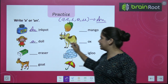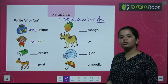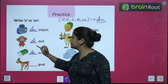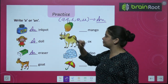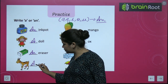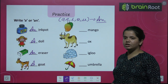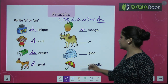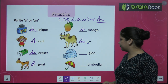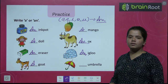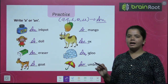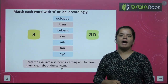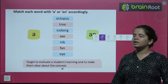Next we have doll. D is a vowel? No. So we use A — D is a consonant. After that, blank eraser — An eraser, because E is a vowel. Next: a goat, because G is a consonant. A mango, because M is a consonant. An ox, because O is a vowel. An igloo, because I is a vowel. An umbrella, because U is also a vowel. With vowels we always use An, and with consonants we always use A.